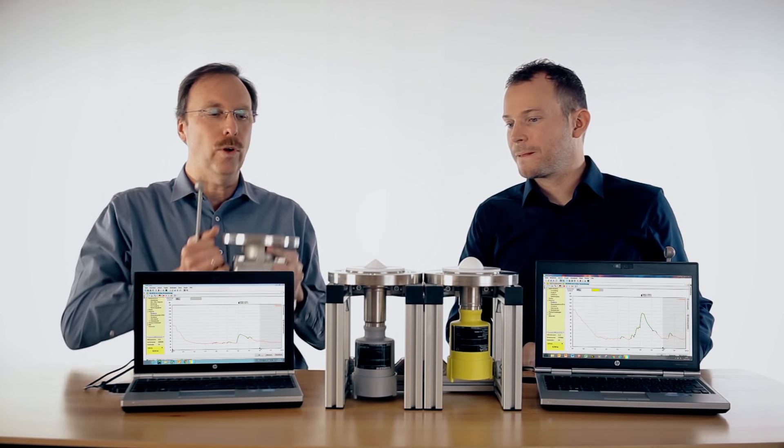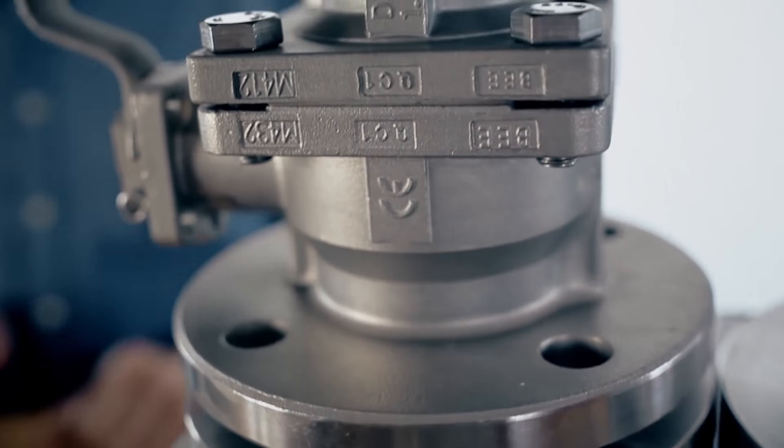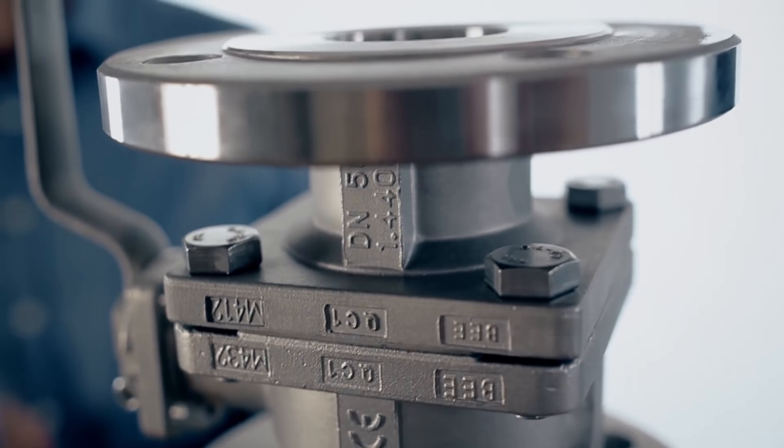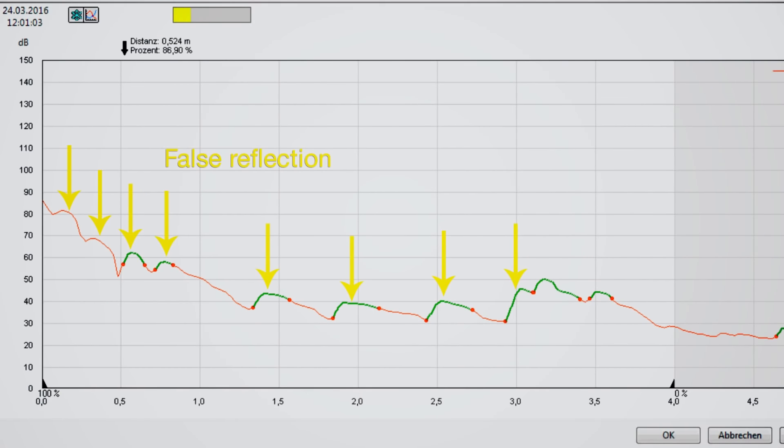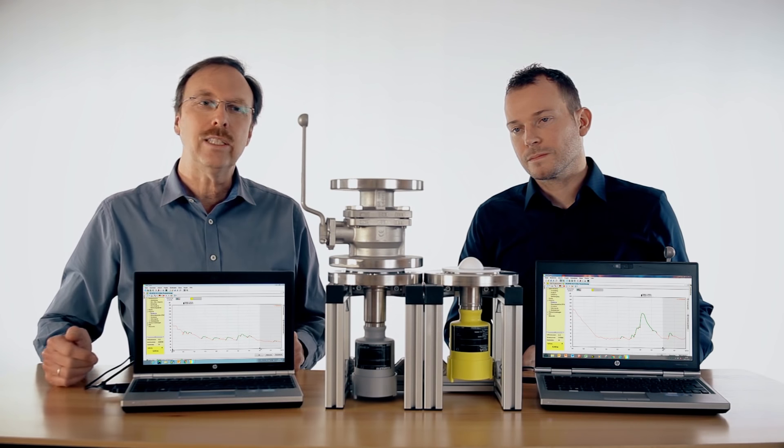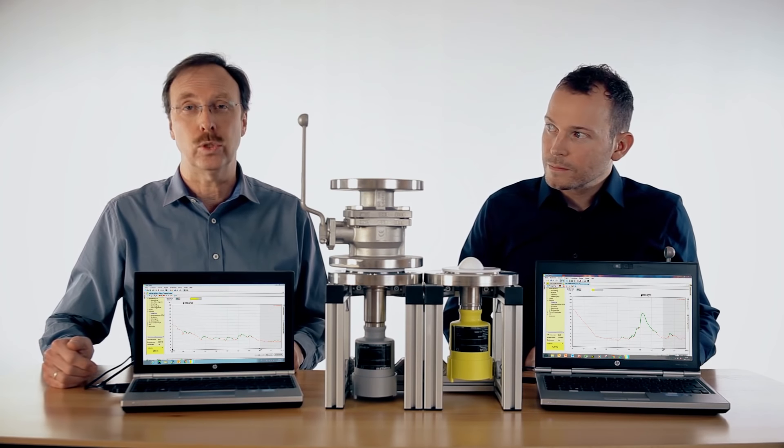Now let's put a ball valve on the sensor and have a look what is the influence. You can see a lot of noise, a lot of disturbances in the near range and the echo is also getting smaller. So in this application it is nearly not possible to measure over the whole range because we get so much disturbance.